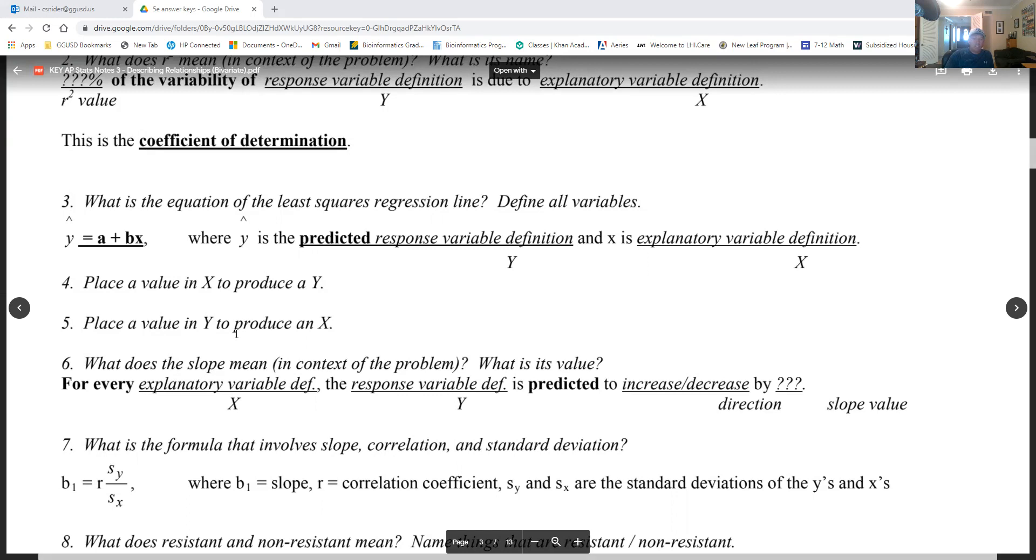Slope: I like the sentence frame 'for every.' So I always start with 'for every.' For every unit of x, so for every mile you walk, the amount of weight you lose is predicted to increase by five pounds or something like that. That's just a made-up problem. Start 'for every' some amount of x, something's going to happen in y, and we're going to practice all this in just a minute.